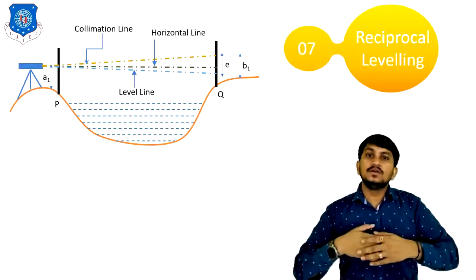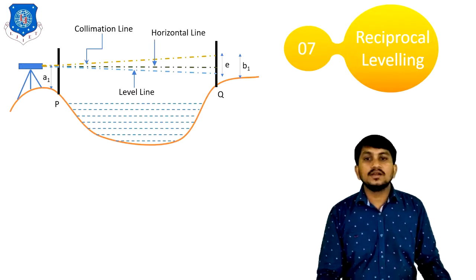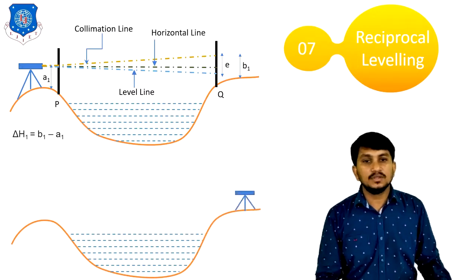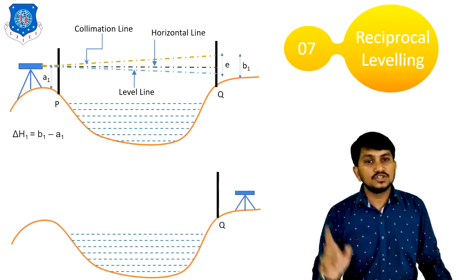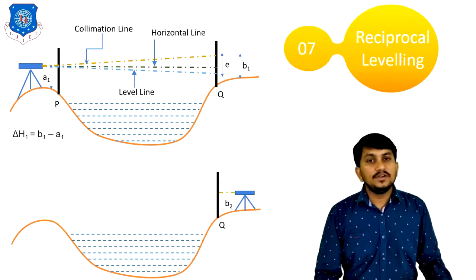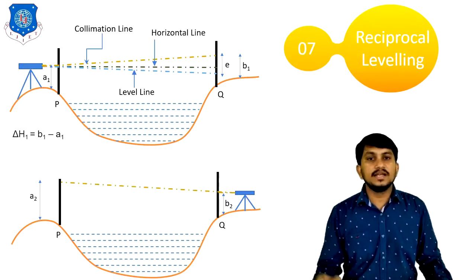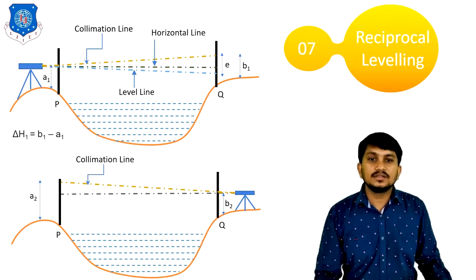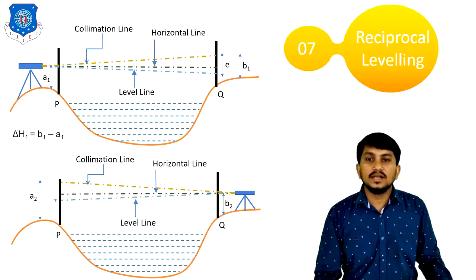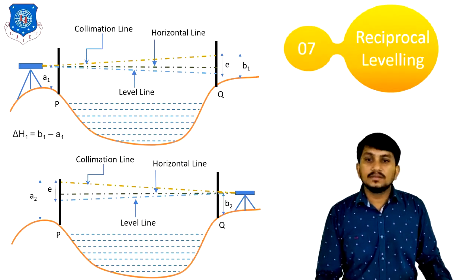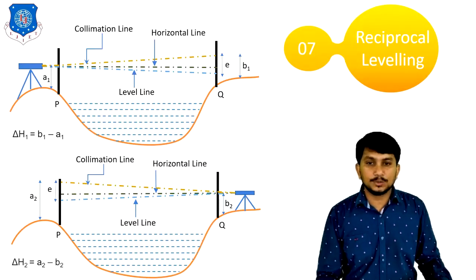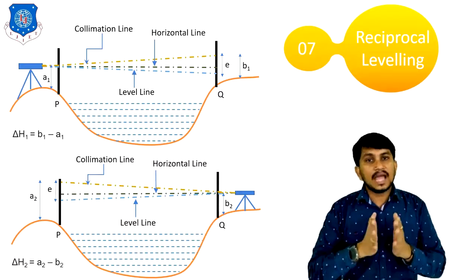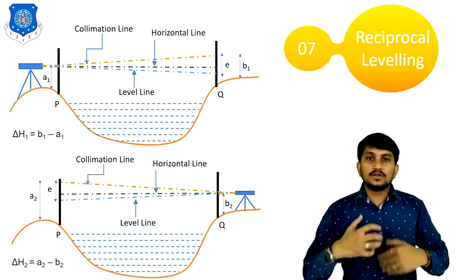So we have to take a number of readings and average them. We do another setup at the other bank of the river. The first reading at station Q is B2, and then the reading at station P is A2. Here also, because of the curvature of the earth, the collimation line introduces an error. The difference between these two staff readings gives delta H2, which is A2 minus B2. To find the actual level difference, we cannot use only delta H1 or only delta H2; we have to take the average of delta H1 and delta H2.